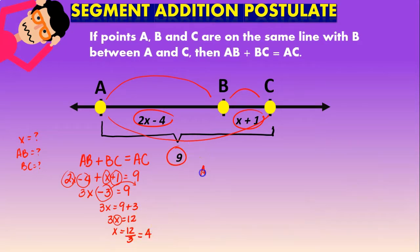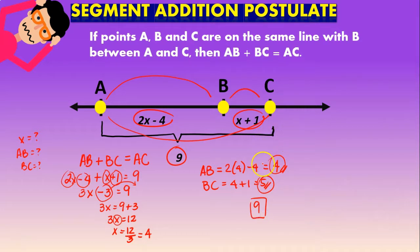Now what is the distance AB? AB is going to be 2 times x, which is 4, minus 4. So that is going to be 8 minus 4, which is again going to be a value of 4. And then BC is going to be 4 plus 1 equal to 5. As you can see clearly, this is not on scale. But when you add 4 and 5, it does give you 9. That means that it is the right answer.